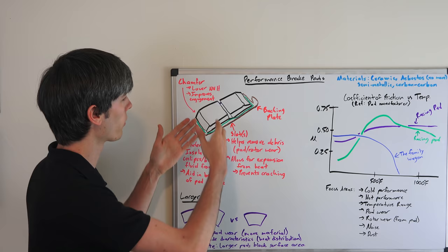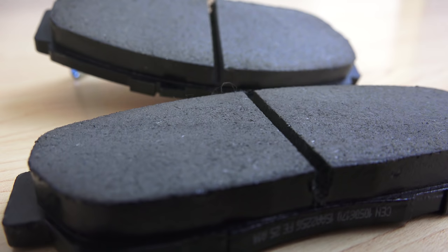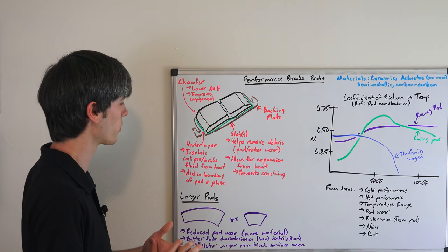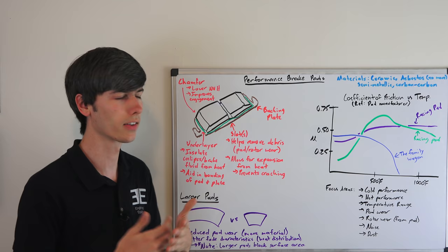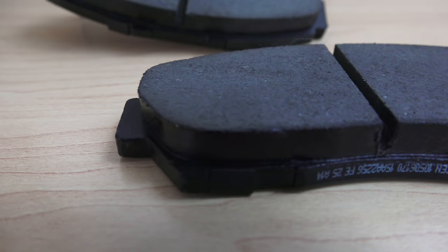Underneath you may have an underlayer and there's multiple roles this can play, and there can be multiple layers as well. But basically you're going to want to insulate your brake calipers so you don't heat up your brake caliper and then heat up the brake fluid. You want to try and prevent that, and it also aids in bonding between the brake pad and the backing plate. And then of course you have the backing plate and this helps hold the brake pad in place in your caliper.